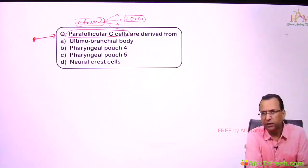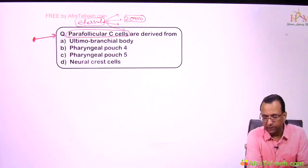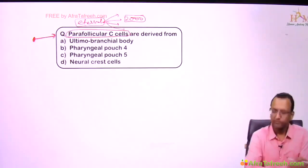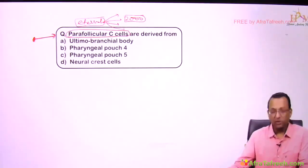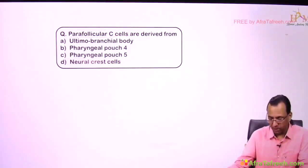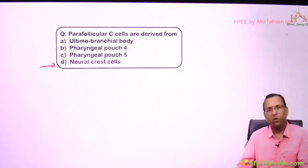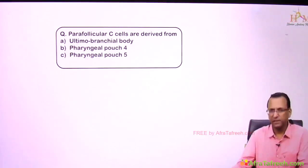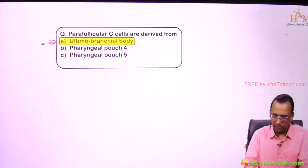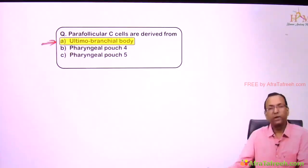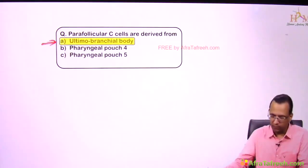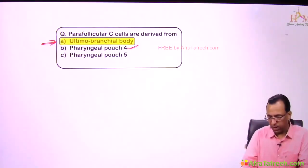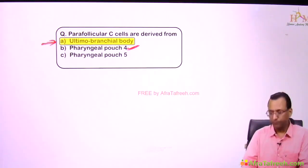Presently, the answer is neural crest cell. The old answer was the ultimobranchial body. If neural crest is not given as an option, your answer becomes ultimobranchial body. And if that is not given, then your answer is pouch number 4. If pouch 4 is not given, then pouch number 5.